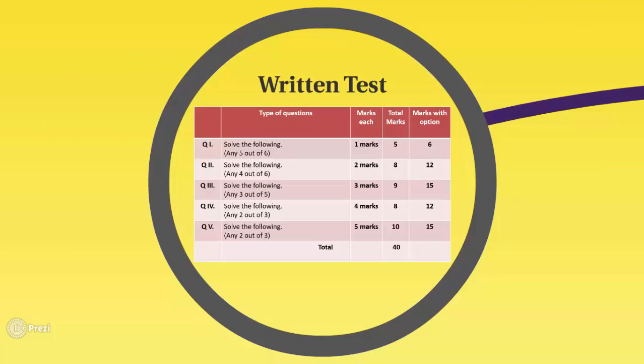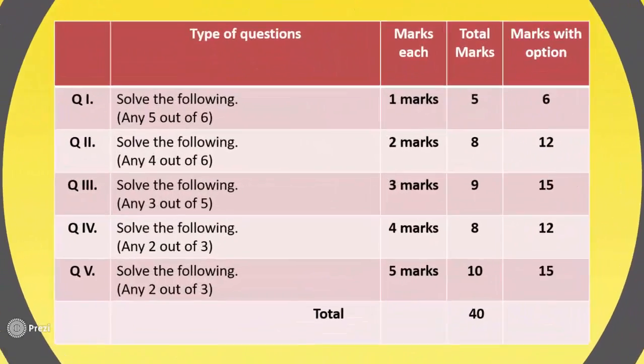We will see the paper pattern for the written test. Total marks for the geometry paper are 40 and time duration is 2 hours. Question number 1 would be: solve the following, any 5 out of 6. Marks are 1 each for question 1, giving total marks of 5, and marks with option would be 6.